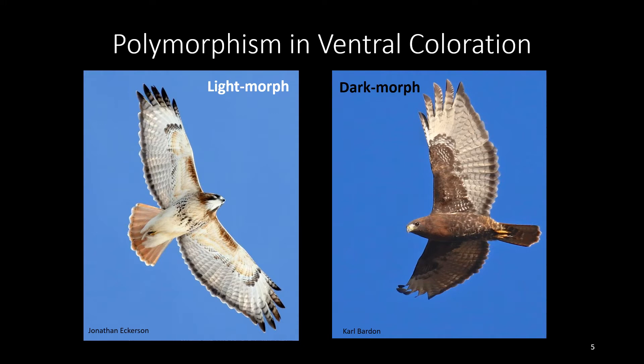What's interesting about red-tailed hawks is that polymorphism varies across their subspecies. The western subspecies, B.J. Chloris, occurs in both light and dark morphs, whereas based on the current state of knowledge, the eastern subspecies, B.J. Borealis, occurs only in the light morph.